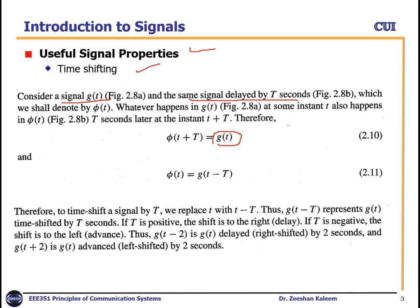Whatever happens in g(t) at some time instant t also happens in phi(t) T seconds later, at time instant t plus T. So if we have g(t) with a delay of T seconds, represented by phi(t), then phi(t + T) equals g(t).